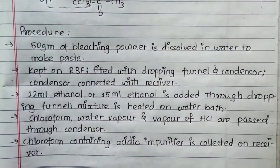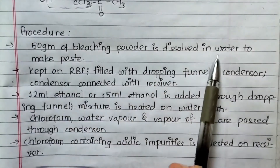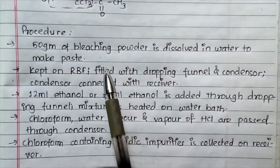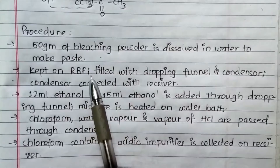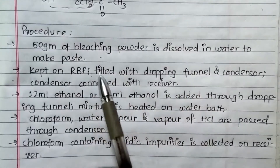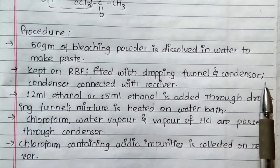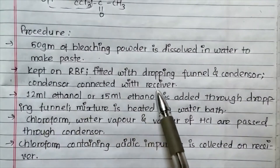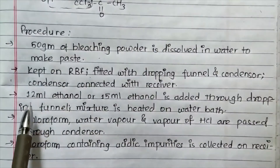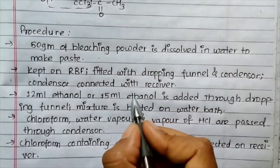Now we have the procedure. 50 grams of bleaching powder is dissolved in water to make a paste. It is placed in a round-bottom flask fitted with a dropping funnel and condenser. The condenser is connected to a receiver.